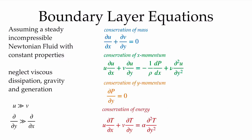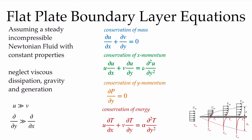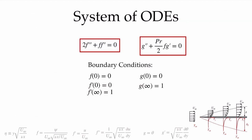The boundary layer equations are presented here, where we have the pressure gradient term appearing in the y-momentum equation. As we saw, when we wish to look at a flat plate boundary layer, there is no pressure gradient, and that pressure gradient term disappears. We convert this system of five partial differential equations into a system of two ordinary differential equations: a third-order ODE representing the hydrodynamic solution, and a second-order ODE representing the energy solution.